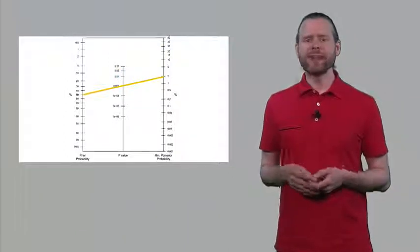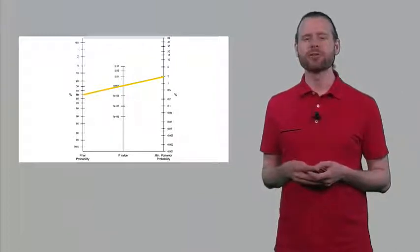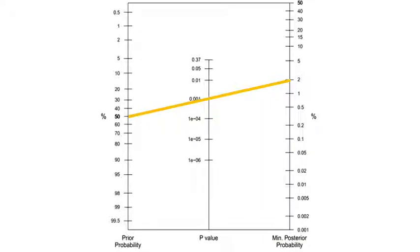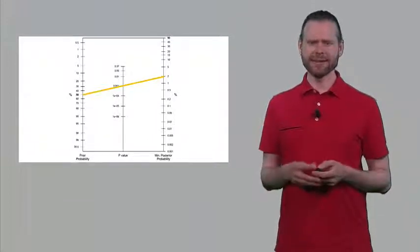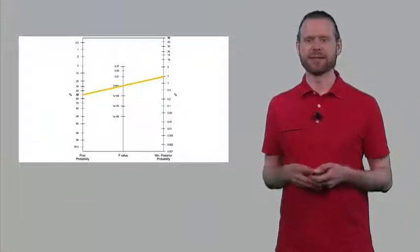This is one way to use Bayesian thinking to acknowledge that a relatively high p-value doesn't mean the null hypothesis is now completely unlikely. Let's say you had the same 50% prior belief, but observed a much lower p-value of 0.001. In this case, the point where the line hits the right axis is around 2%. So given this quite strong data, we now have a posterior belief that the null hypothesis is true of only 2% — a huge drop from the starting 50%.